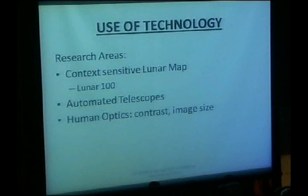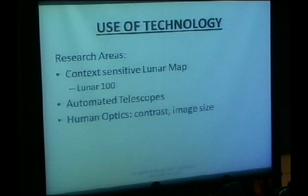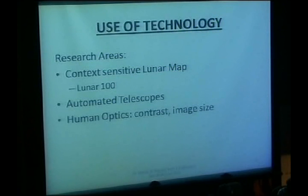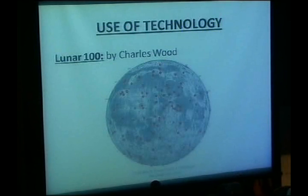Some of the areas that have already been done which will help in astronomy education are context-sensitive lunar maps. One is called Lunar 100, where the whole lunar map is there and when you click on different areas it gives you details of that area — that is important especially when you want to explore specific features. In terms of automatic telescopes and human optics, we have a lot of work to do in terms of contrast and image size.